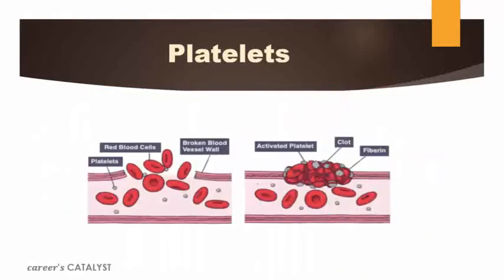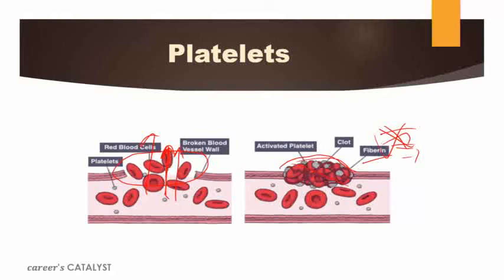As you can see here, these are the platelets. Let's suppose you have some injury — there is an opening or pore, so blood cells can come out. What happens is these platelets will make a fibrous, net-like structure here. This fibrous structure is basically called fibrin. It helps to clot the blood and prevent cells from leaving the body. The remaining cells will be retained because of this clot. So this is the defense mechanism — platelets help prevent excess loss of blood.